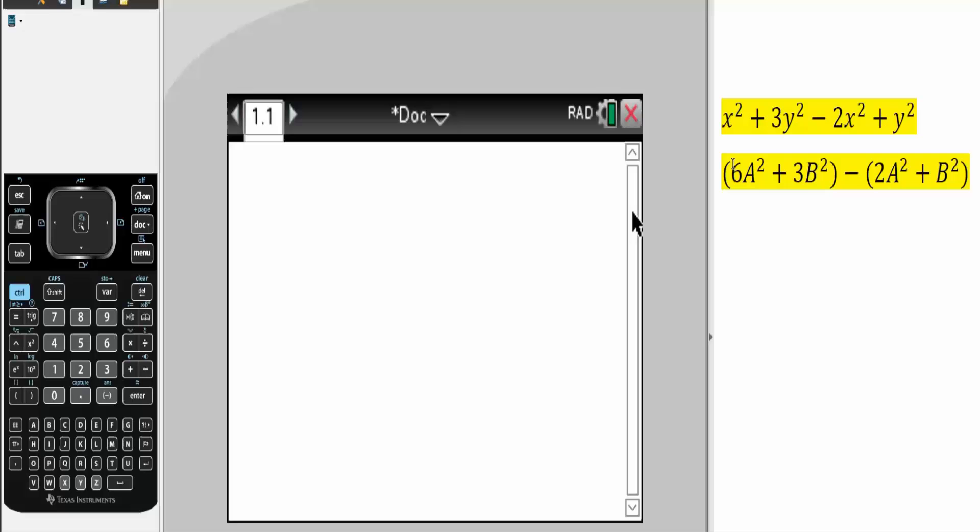You simply need to write down what you have. So you have x squared plus 3 times y squared minus 2 times x squared plus y squared, like this. It's identical.